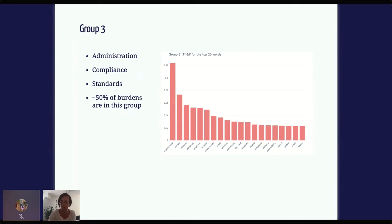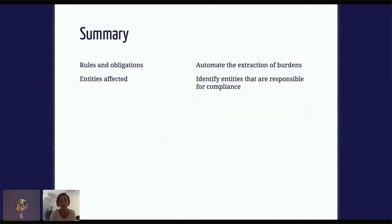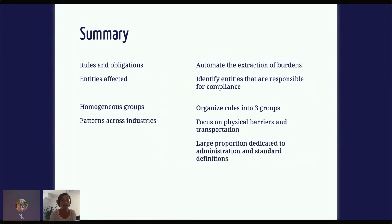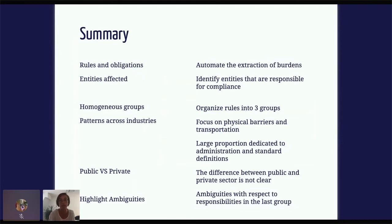To recap: in terms of content, we wanted to find goals and obligations, and we were able to automate the extraction of burdens. We also wanted to know what the entities affected were, and we were able to do that by extracting the subjects of the sentences. We then successfully organized them into three homogeneous groups using k-means. We looked for patterns across industries but didn't really find that — we did find the legislation has a strong focus on physical barriers and transportation, and a large proportion dedicated to administration and standard definition. We weren't really able to find a clear difference between private and public, and we were able to highlight some ambiguities with respect to the last group.